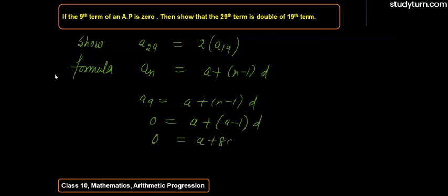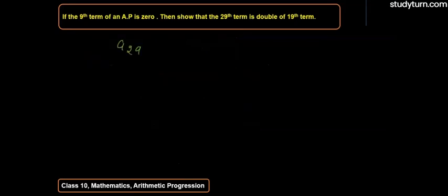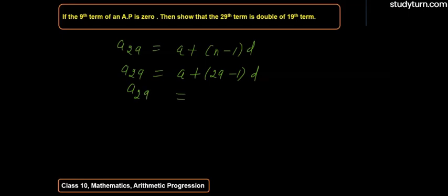For the 29th term: a_29 = a + (29-1)d = a + 28d.